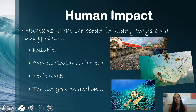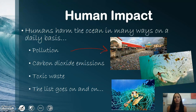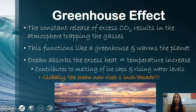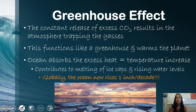Now for the human impacts. Humans harm the ocean in many ways: pollution, carbon dioxide emissions, toxic waste, and litter. The greenhouse effect is a constant release of excess CO2 resulting in the atmosphere trapping gases — our whole planet is like a greenhouse warming over time. The oceans are absorbing excess heat, causing ocean temperatures to increase, contributing to melting ice caps and rising water levels. The ocean now rises one inch per decade globally, which is significant.